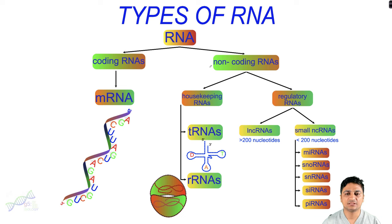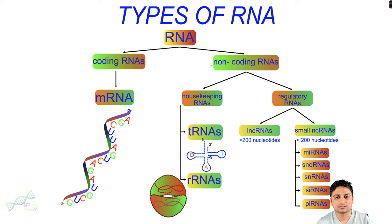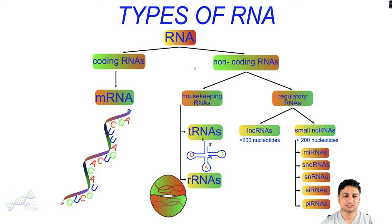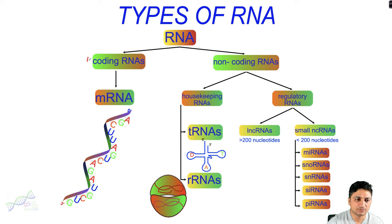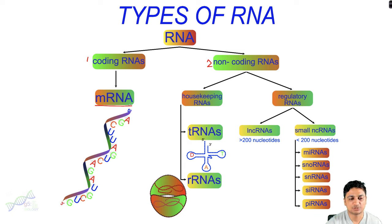Besides these three types of RNA, there are some other types that we will cover in upcoming lectures. Based on the coding and non-coding nature of RNA, they are divided into two types: coding RNA and non-coding RNA. In the coding RNA category we have only mRNA, which is translated into protein — it codes for particular amino acids and is therefore called coding RNA.